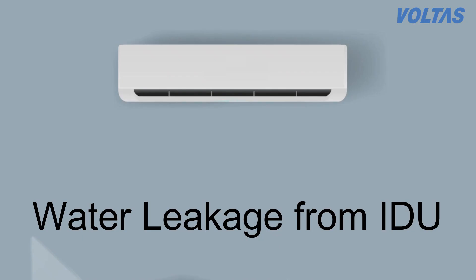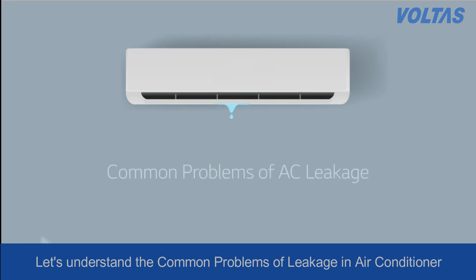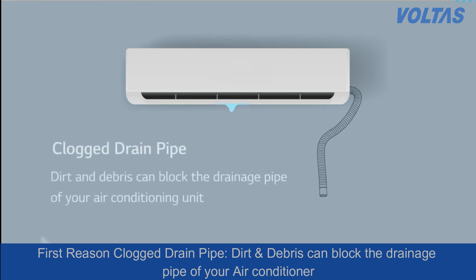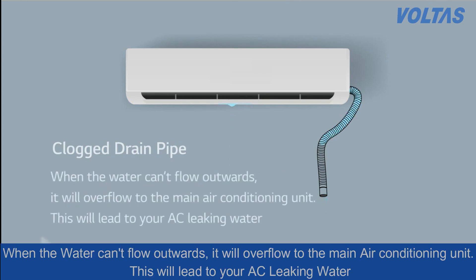Water leakage from the indoor unit — let's understand the common problems of leakage in an air conditioner. The first reason is a clogged drain pipe. Dirt and debris can block the drainage pipe of your air conditioner. When water can't flow outwards, it will overflow to the main air conditioning unit, leading to your AC leaking water.